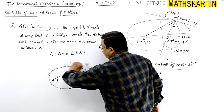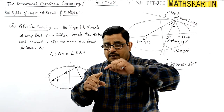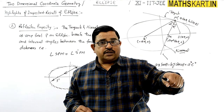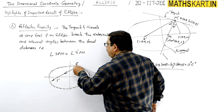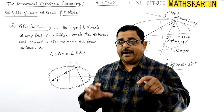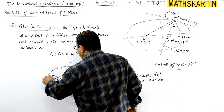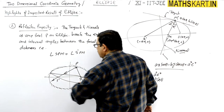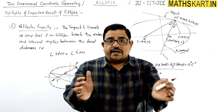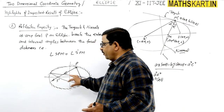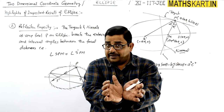So if you put a torch at one focus, then after reflection from the ellipse at any point P, the ray passes through the second focus. Light keeps rotating inside the ellipse — from one focus to the ellipse surface, then to the other focus, and so on. This is the reflection property of the ellipse.